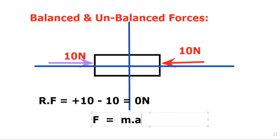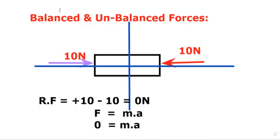When force is 0, it means m × a = 0. The table has some mass, so mass is not 0. The only way the product is 0 is if acceleration is 0. So when we have balanced forces, acceleration is 0.